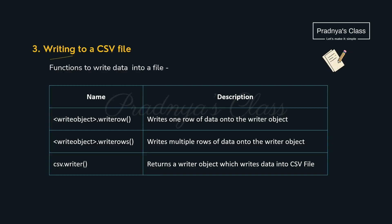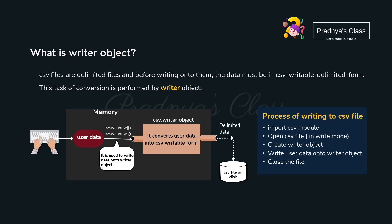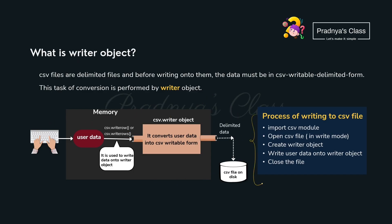Now it is time to discuss how to write data to a CSV file. For that, we will be using two functions: the first is WriteRow and the second is WriteRows. WriteRow writes one row of data, whereas WriteRows writes multiple rows of data. For writing, we need a WriterObject. Using the keyboard, we take the data we want to write to the CSV file. That data is provided to WriteRow or WriteRows functions, which then pass it to the WriterObject. The WriterObject converts the data to delimited format — meaning fields get separated by commas — and that formatted data gets written to the CSV file.